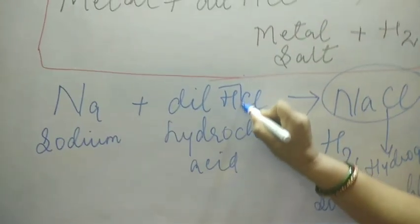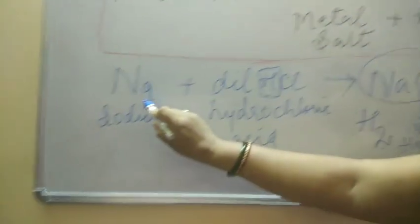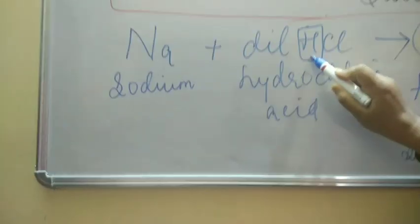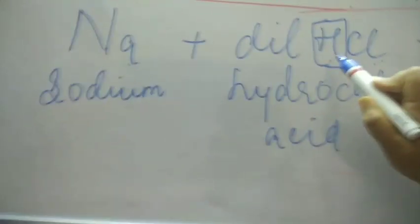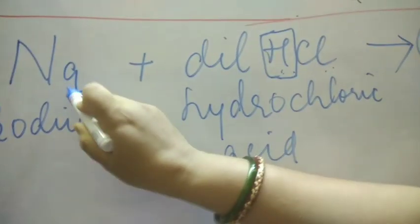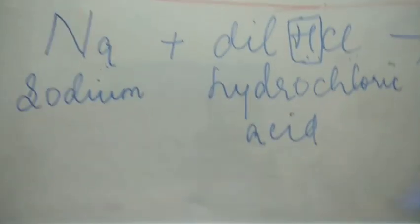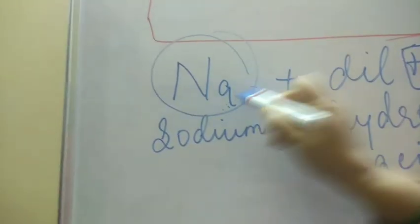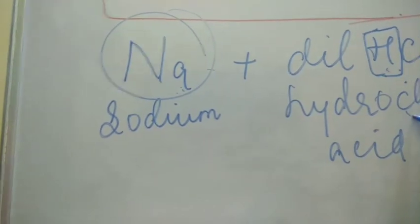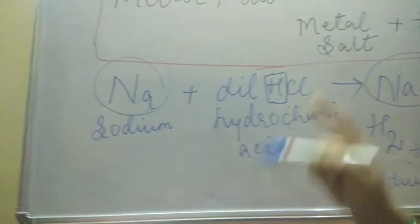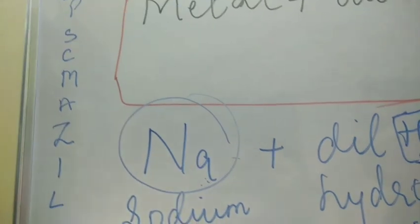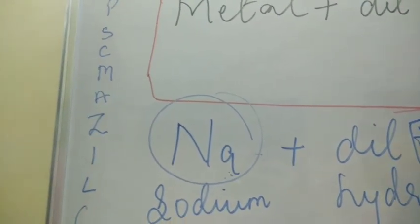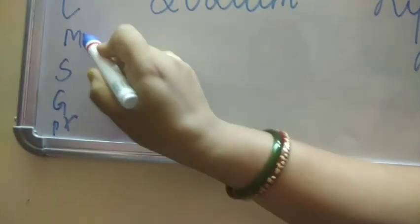Now, why did I tell you about the reactivity series? In hydrochloric acid there is hydrogen, and when a metal reacts, you are displacing the hydrogen and the metal takes its place. So when sodium displaces hydrogen from hydrochloric acid, sodium must be more reactive than hydrogen. To know which metals are more reactive than hydrogen, you look at the reactivity series. The mnemonic I taught you is: Please Send Cats, Cats Monkeys And Zebras In Lovely Cages Made Of Silver Gold And Platinum.